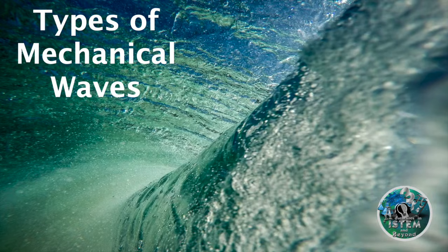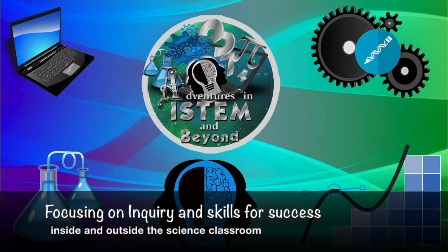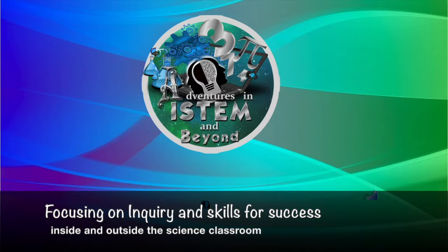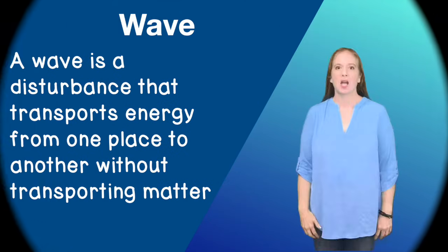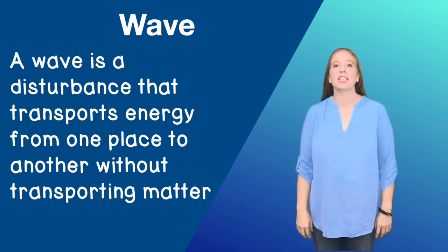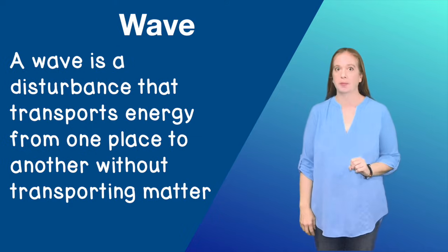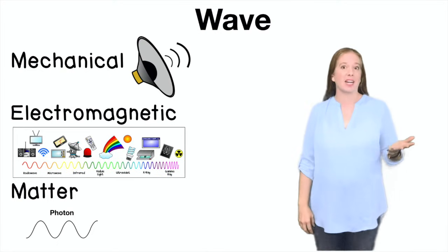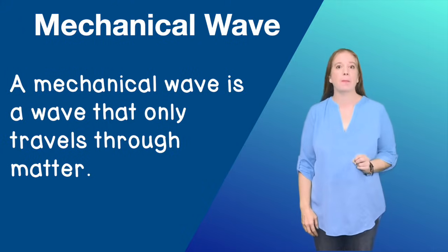Types of Mechanical Waves. A wave is a disturbance that transports energy from one place to another without transporting matter. Waves can be mechanical, electromagnetic, or matter. The focus of this video will be on mechanical waves.